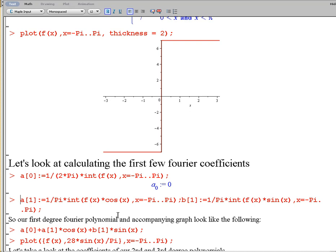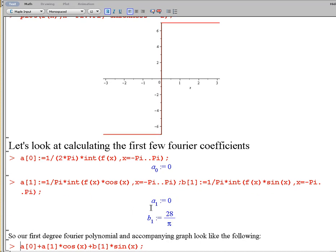We'll also do a sub 1 and b sub 1. So a sub 1 comes out to be 0. b sub 1 becomes 28 over pi.